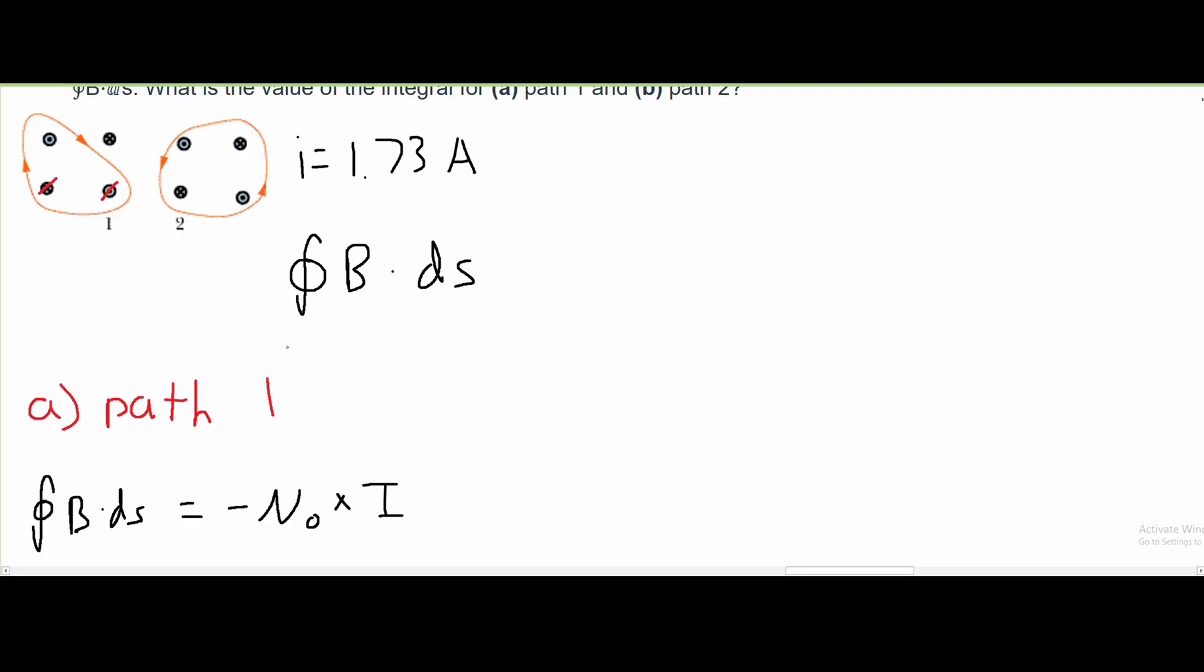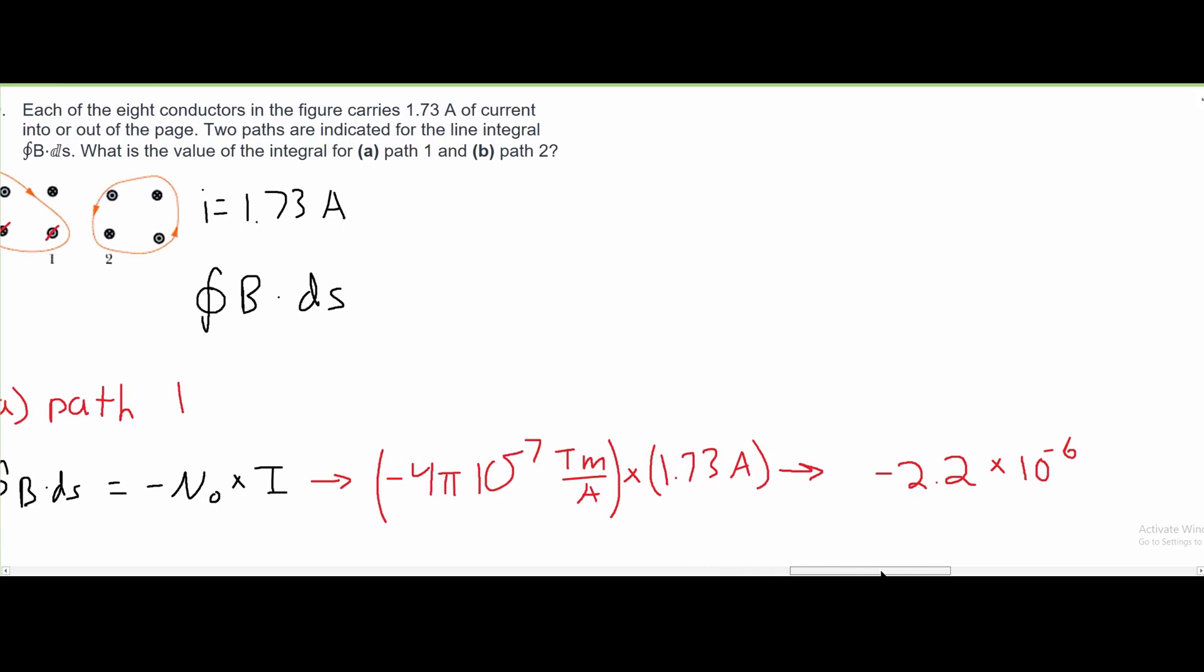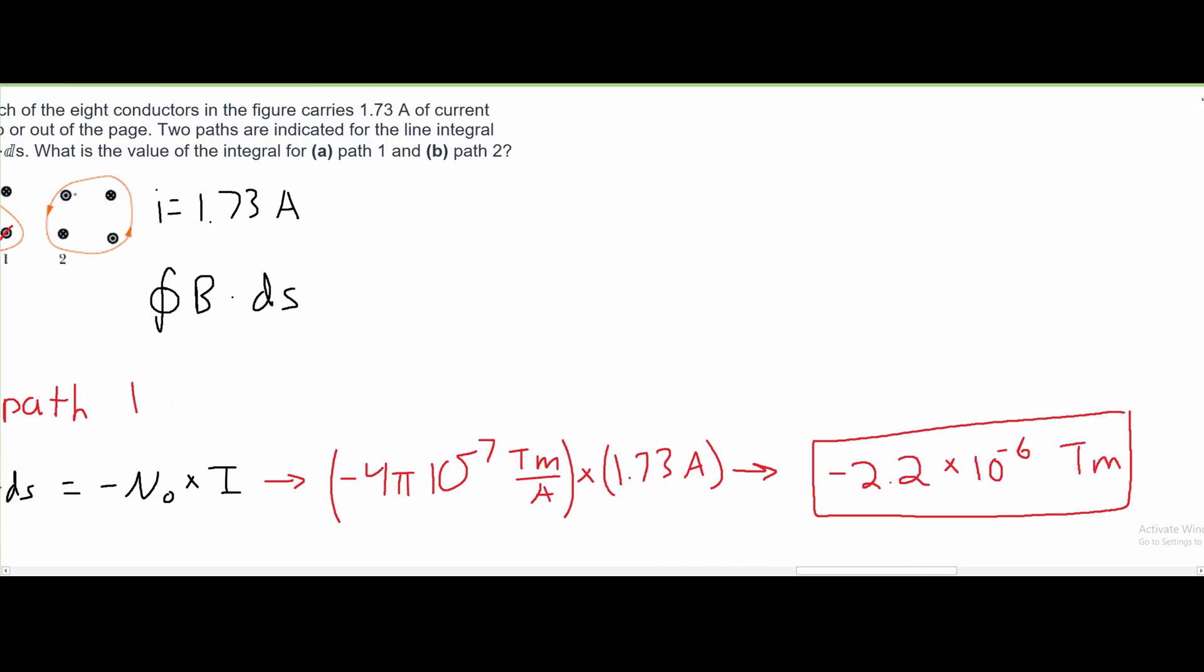Now we can just go ahead and plug in the values here. After we plug this into a calculator, we are going to get the approximation of negative 2.2 times 10 to the negative 6, and this is going to be in tesla meters. That is the answer for part a.